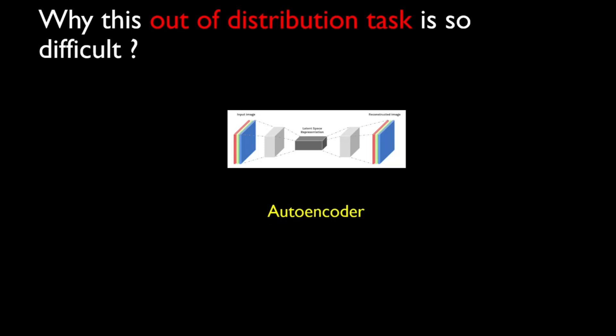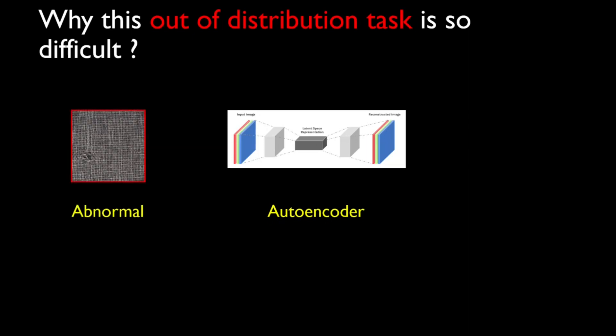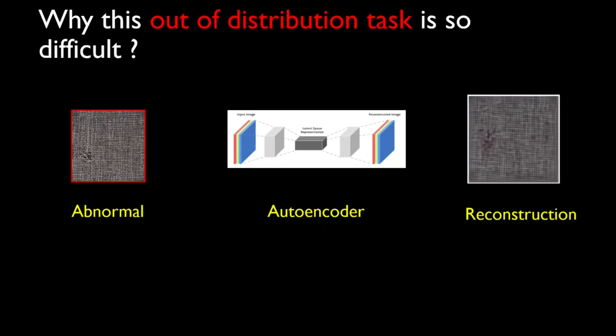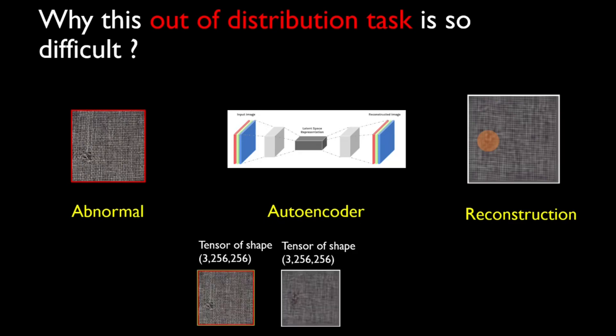So why is this out of distribution task so difficult? For the industrial anomaly case, we see that only a small part of the total image is actually defected. Rest of the parts are very similar to normal image. So we have very less room to work with. If we see the reconstruction of this abnormal image from the autoencoder, we see that even the distorted part is pretty much well reconstructed.